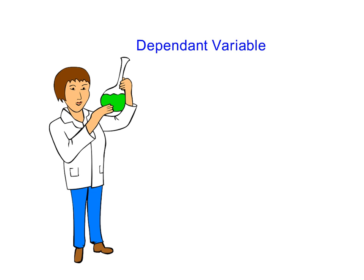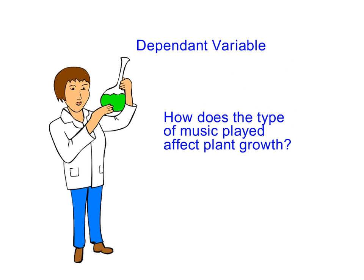The dependent variable, then, is a resulting variable. In other words, it results as an action of the independent variable. So if we go back to that question again, how does music affect plant growth? The independent variable is the type of music that we play, and the dependent variable is going to be the plant growth.